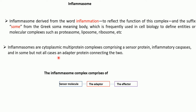The inflammasome complex consists of a sensor molecule, an effector molecule, and also an adapter molecule that connects the sensor and effector — but not all inflammasomes have this adapter molecule. The ultimate function of this inflammasome complex is to perform inflammation.